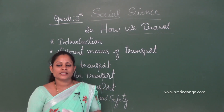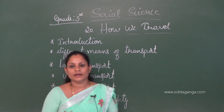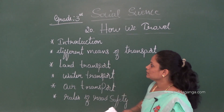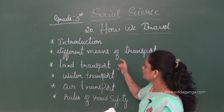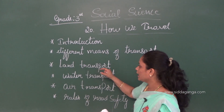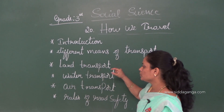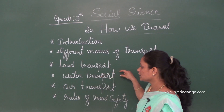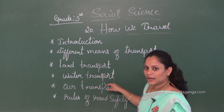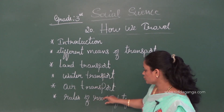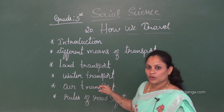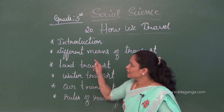In this chapter, we will learn about: introduction, different means of transport, land transport, water transport, air transport, and rules of road safety.